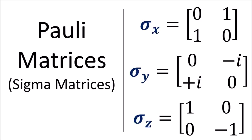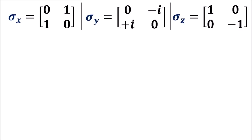Later in this video, we'll see how these matrices can help us reflect and rotate vectors. Here are the three Pauli matrices: sigma x, sigma y, and sigma z. These are also called sigma 1, sigma 2, and sigma 3 in some sources.